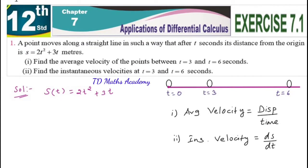Students, I am going to teach Chapter 7, Exercise 7.1, Question 1. A point moves along a straight line in such a way that after t seconds its distance from the origin is s equal to 2t squared plus 3t meters. First we have to understand what we are going to do.